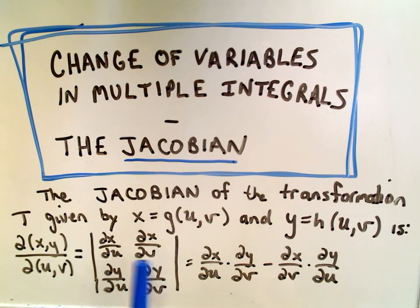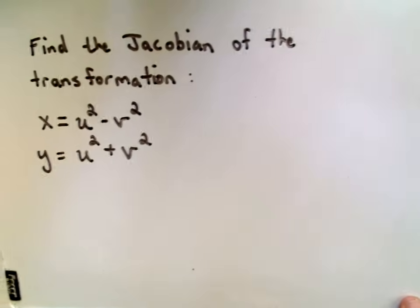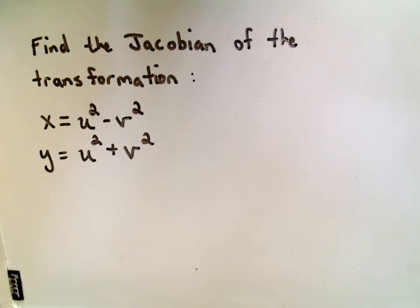And this is where the Jacobian is given by the functions - x is a function of u and v, and y is also a function of u and v. All right, so we're going to find the Jacobian of this transformation. So x is given by u-squared minus v-squared, and y is u-squared plus v-squared.